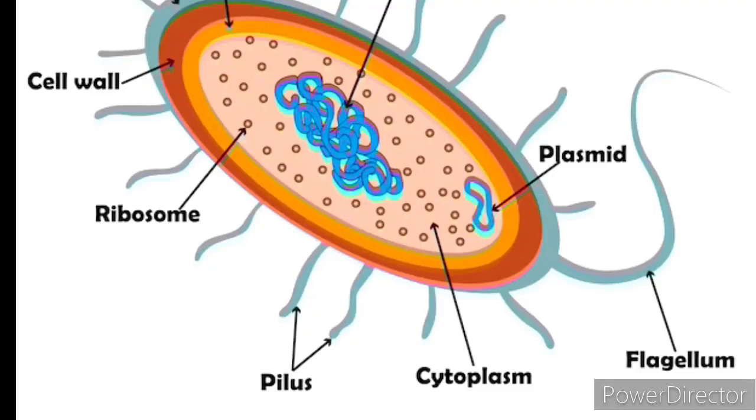Additionally, the arrangement of microtubules in structures like cilia and flagella enables cellular movement.